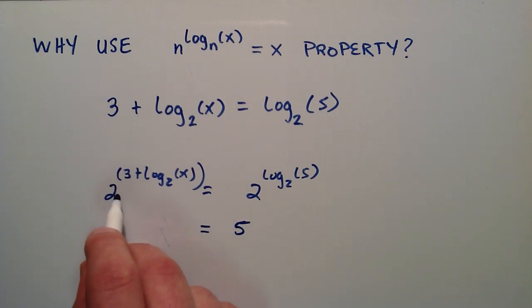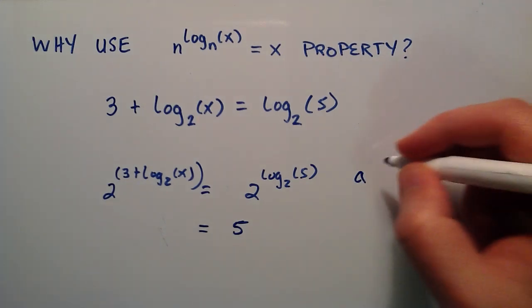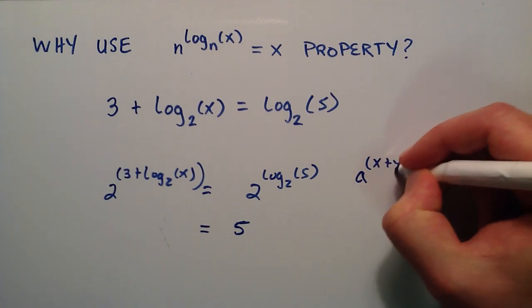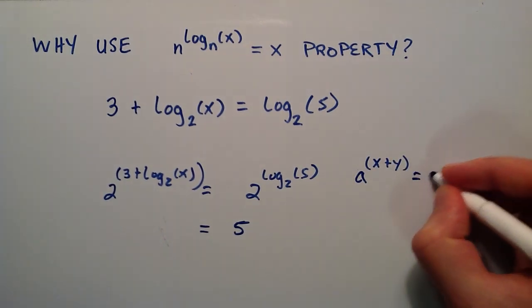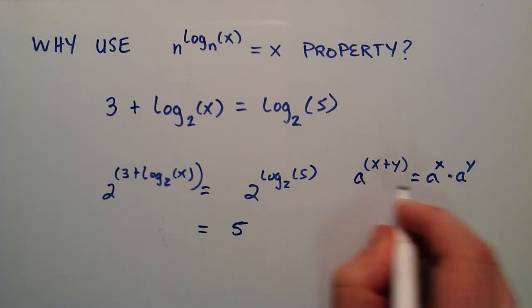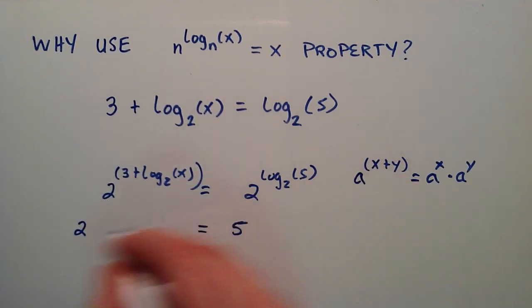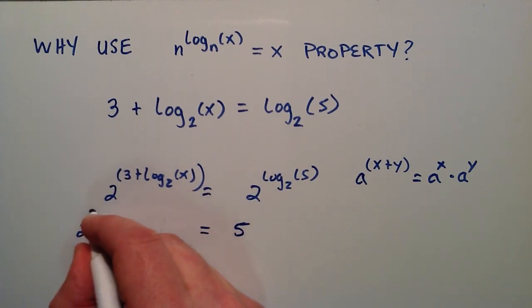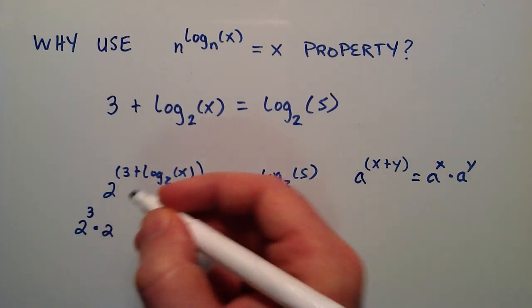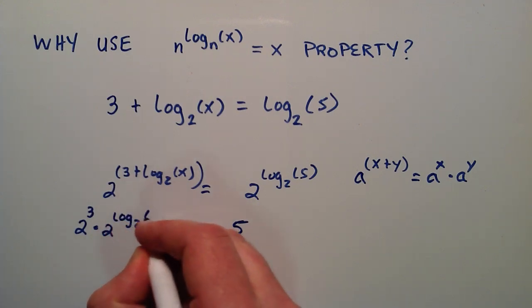Now the left hand side, we've got to use a property of exponents here. So if we have some base, we'll just call it a, and if a is raised to the x + y power, we can rewrite this as a to the x times a to the y. So applying this property of exponents to what we have over here, this becomes 2, so 2 would be our a in this case, and then our x could be the 3, so this would be 2 to the 3 multiplied by a to the y, so 2 to the y would be the log base 2 of x in this case. So 2 to the log base 2 of x.